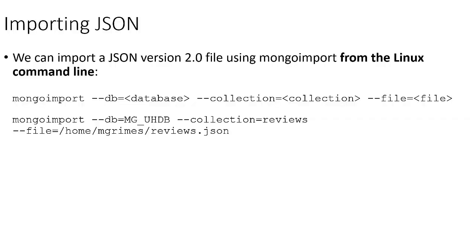The second approach for getting data into MongoDB is to import a JSON file using the mongoimport command. By default, mongoimport wants a JSON file that adheres to the version 2.0 specification of JSON. The basic format of the command is: mongoimport --db equals the database name, --collection equals the collection name, and --file equals the name of the JSON file. Since we're loading reviews.json into a collection called reviews in our mg_uhdb database, this is what that command looks like.